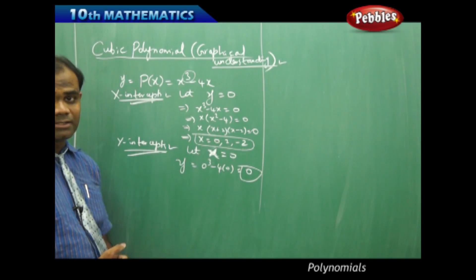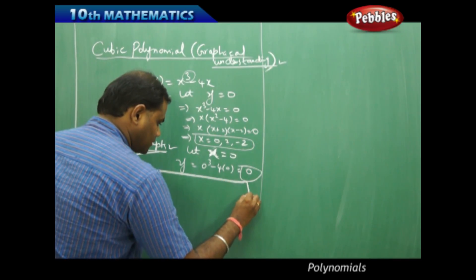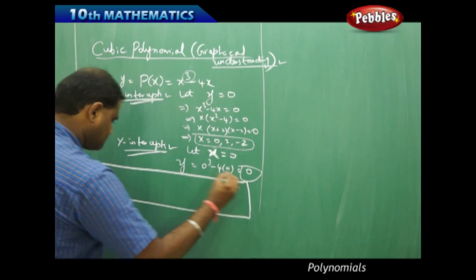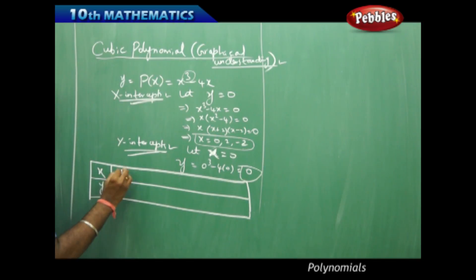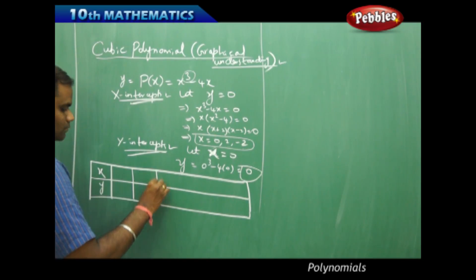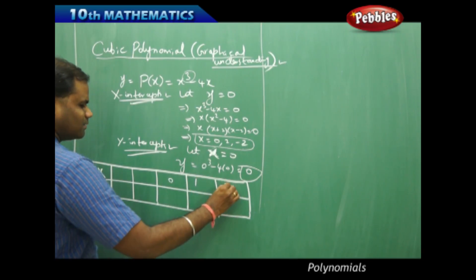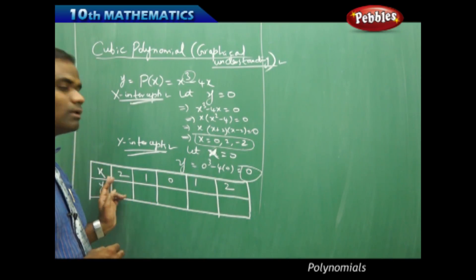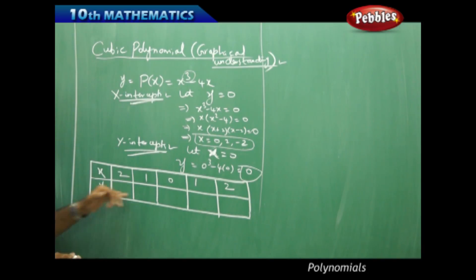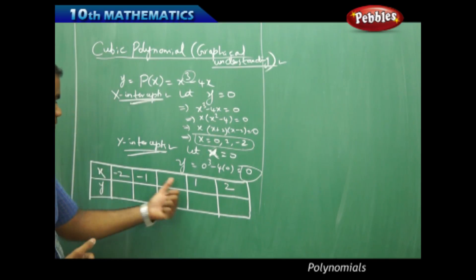Now that I have the x and y-intercepts, I set up the table of values. I will randomly take a few x values on both sides: minus 2, minus 1, 0, 1, and 2, and then find the respective y values for each.